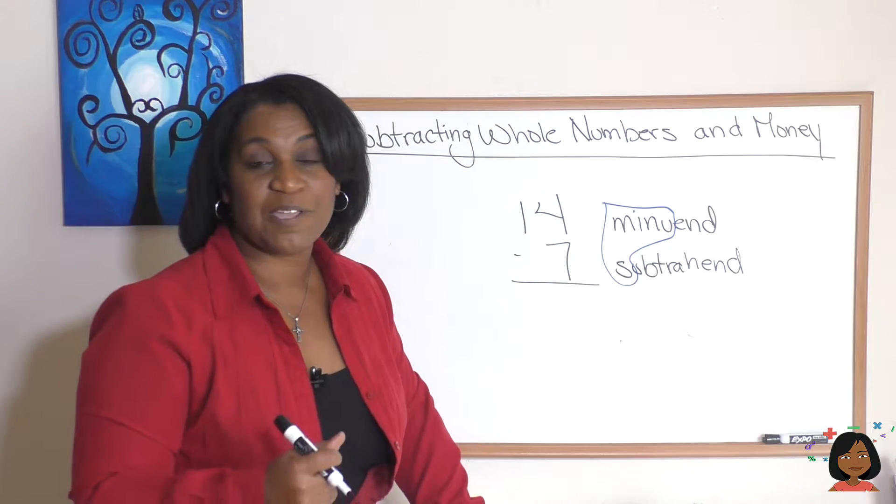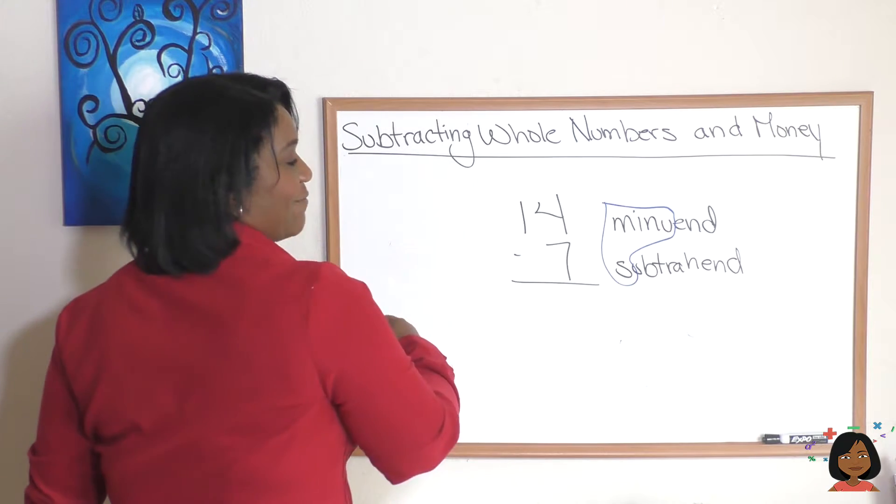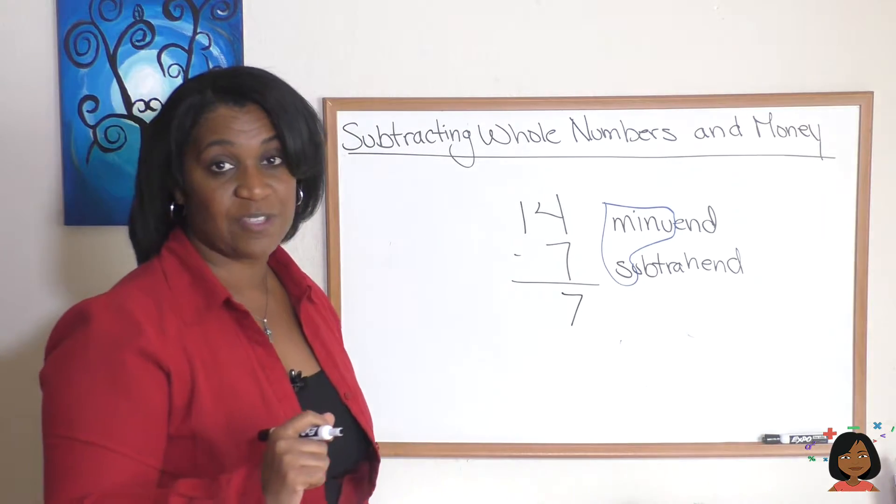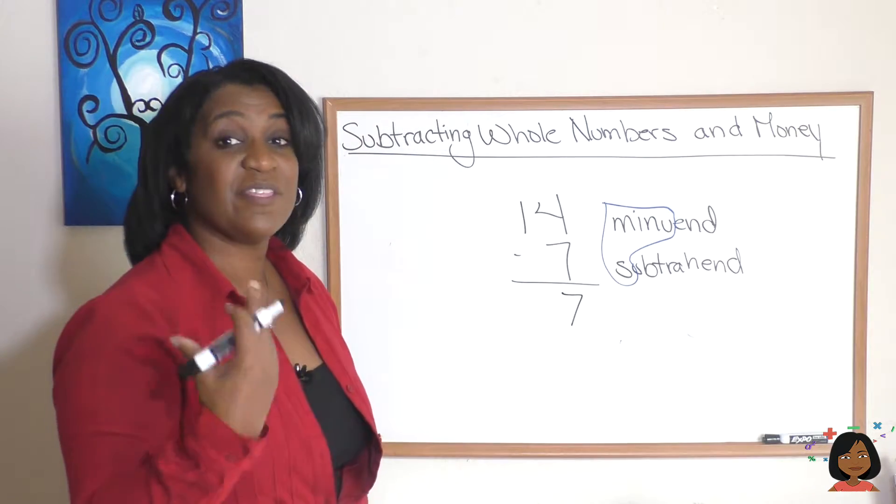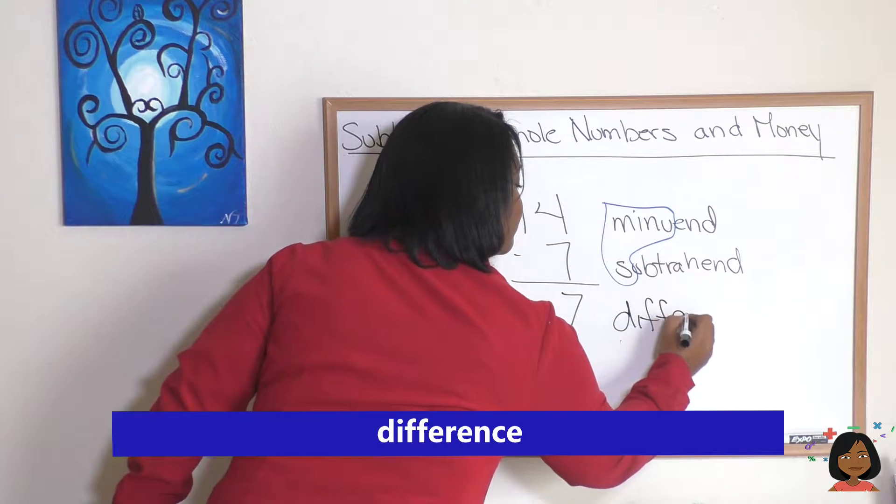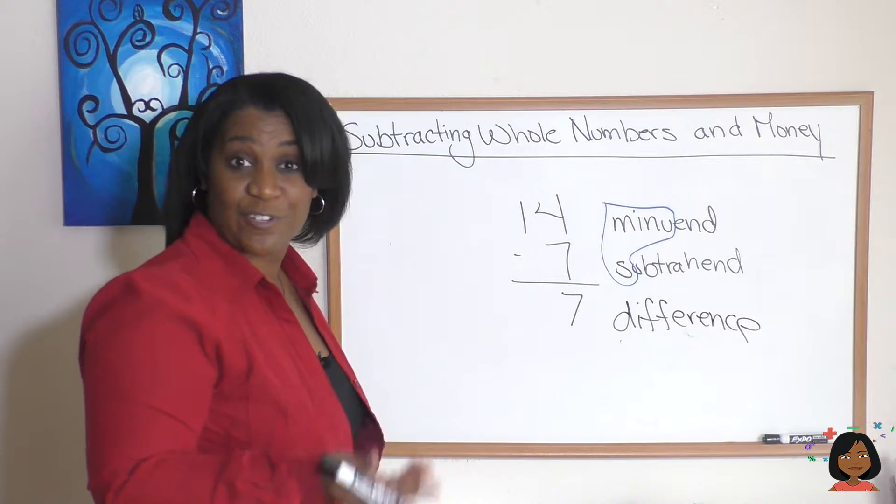Let's keep it going and do our subtraction: 14 minus 7 is 7 and this has a special name in math as well, it is called the difference. So there are your terms for subtraction.